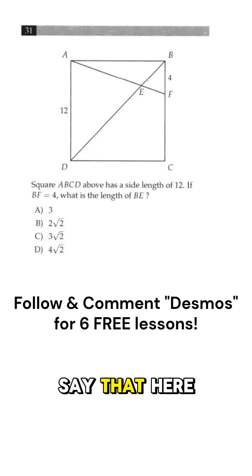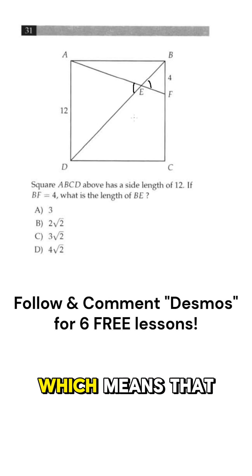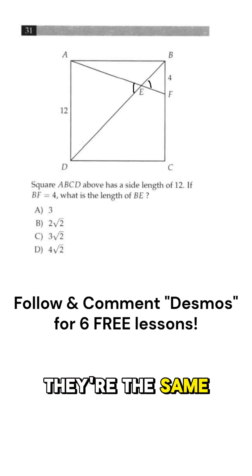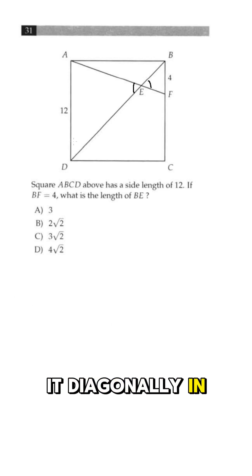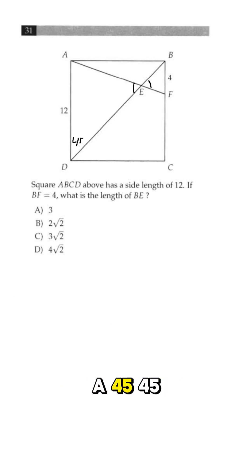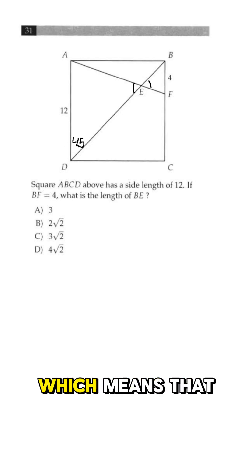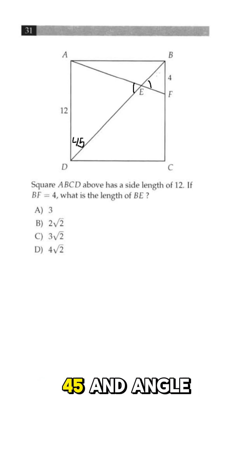We can say that here we have vertical angles, which means that they're the same. We also know that in a square, if we cut it diagonally in half, we will have a 45-45-90 triangle, which means that angle D is 45 and angle B is 45.